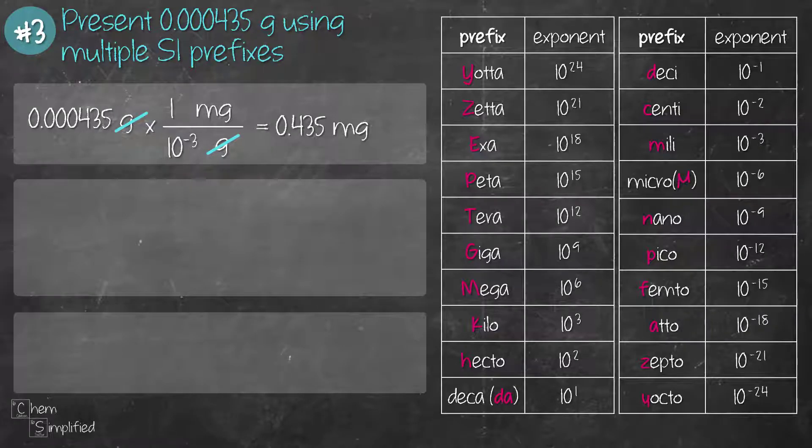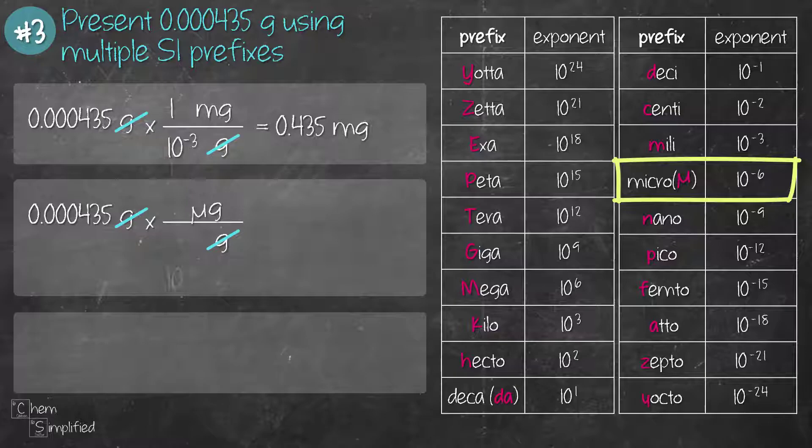Now let's do the conversion this time from the given decimal value. Let's convert it to micrograms. So we do the same thing, multiply, place grams at the bottom so it cancels out and then we place the prefix that we want. In this case let's put microgram on the top. From the SI prefix table, micro's exponent is 10 to the negative 6. So 1 microgram is 10 to the negative 6 grams. Solve the math and that works out to be 4.35 times 10 to the power of 2 micrograms. If we write it in decimal, it's going to be 435 micrograms.